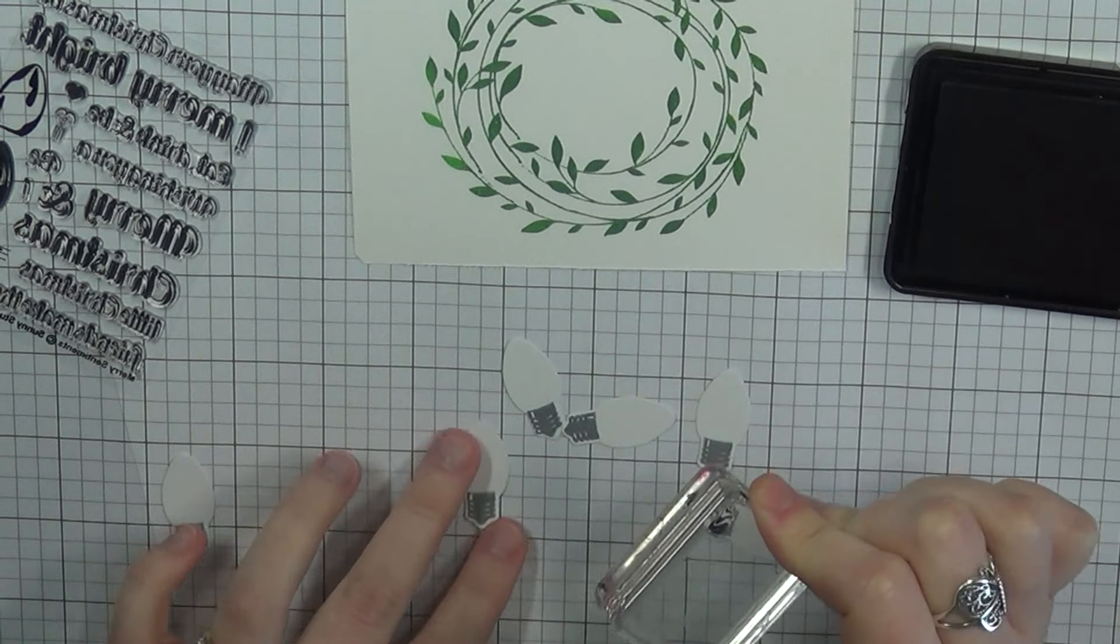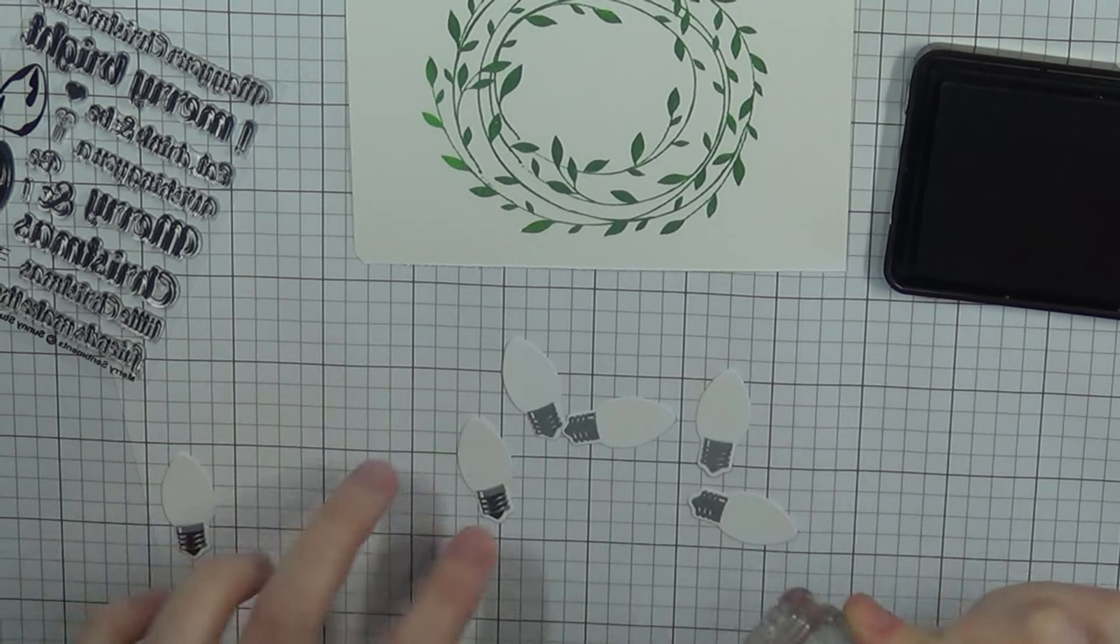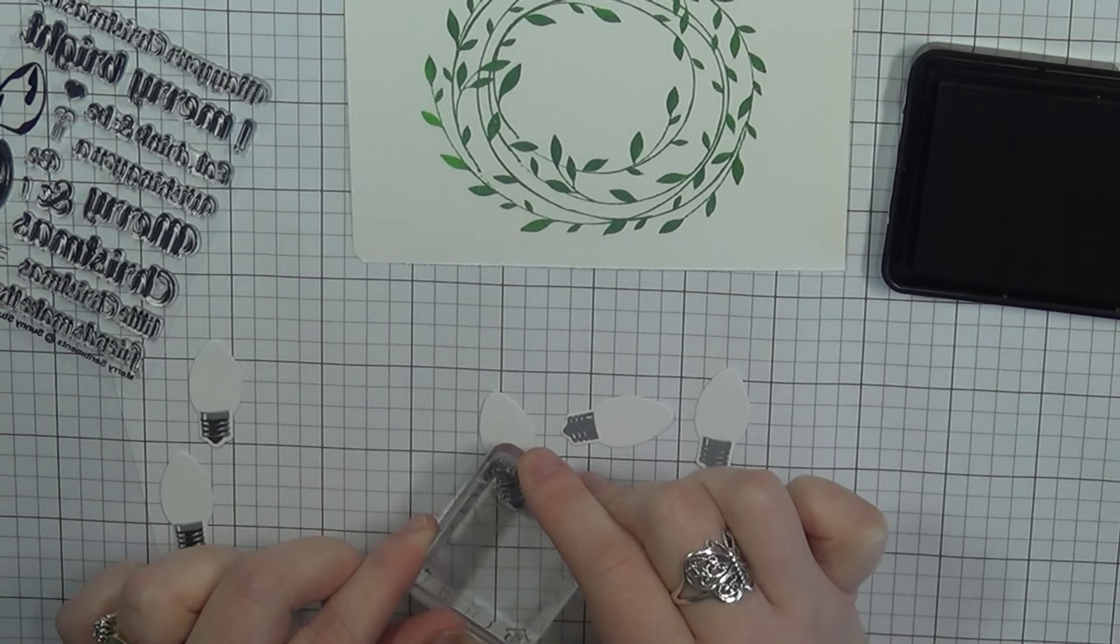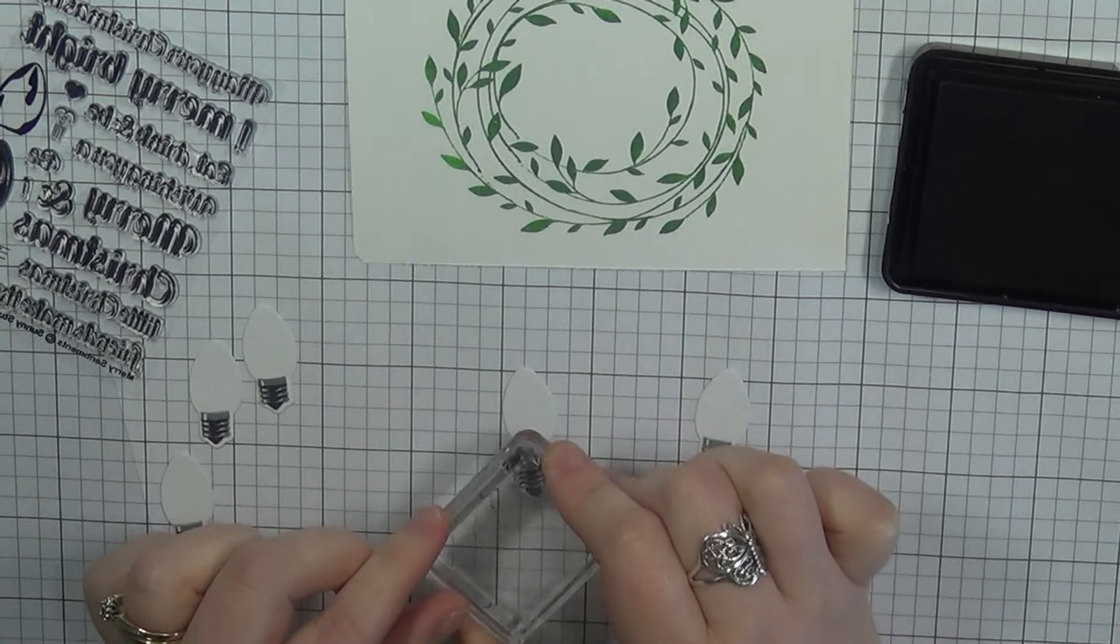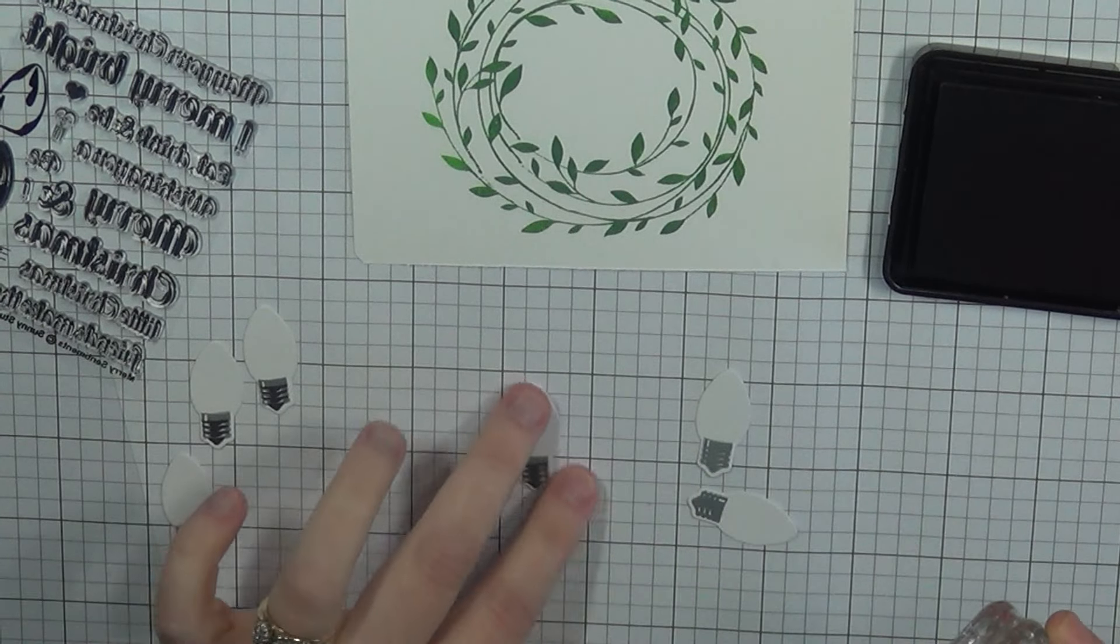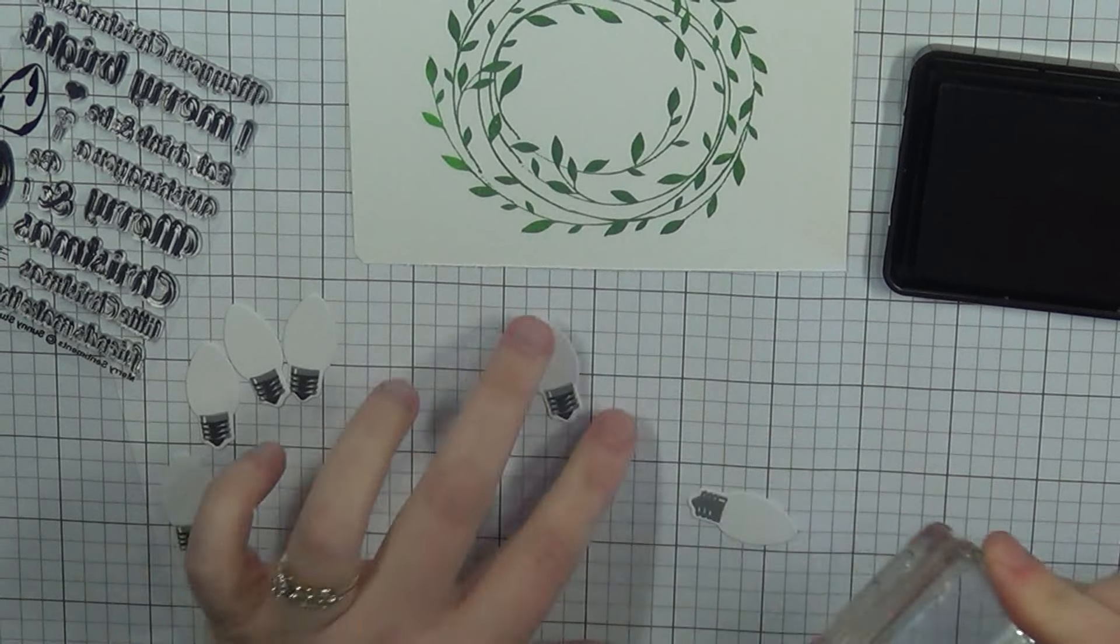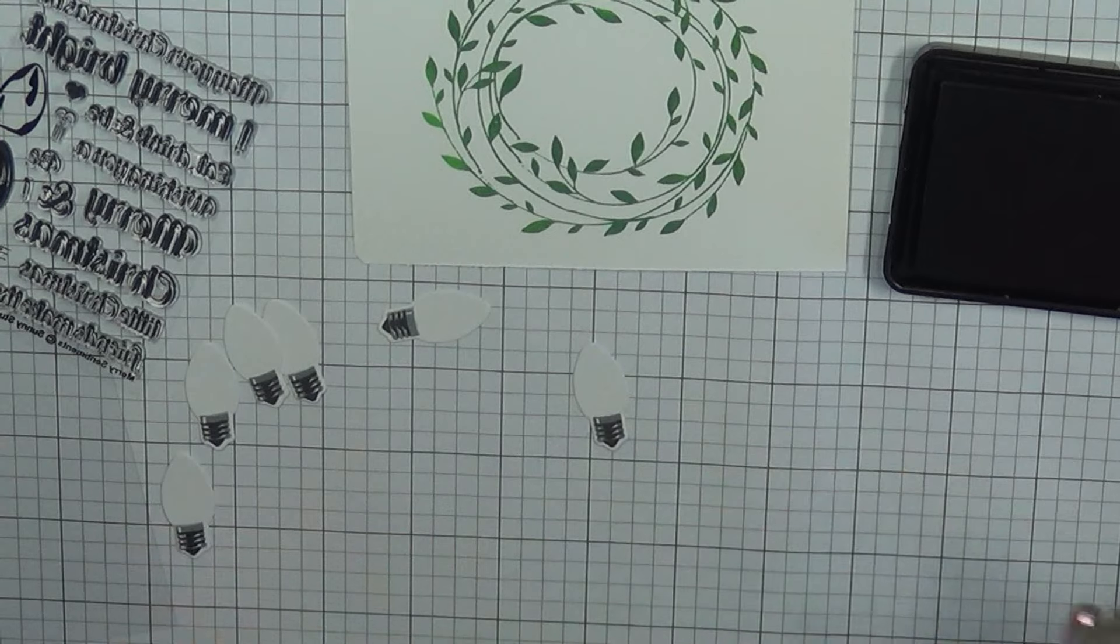All of the inks that you see me using today are from Lawn Fawn and I used a lot. So all of the ones that I did use obviously as always I will go ahead and list them and link them below for you. So I'm continuing to go ahead and stamp out all of these bulbs here kind of like an assembly line style.